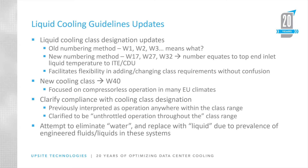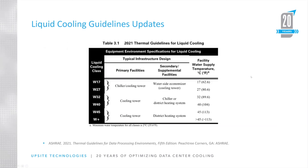Here is the updated table. The primary change is the temperature designations — W17, W27, W32 — as opposed to W1, W2, W3. W40 is a new classification added here. The old W5, which covered anything over 45 degrees centigrade, is now called W-plus, since there's no real upper bound on it.